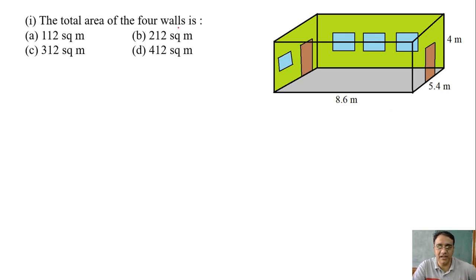What is the total area of four walls? Length is given 8.6, breadth is given 5.4, and the height is given 4. What is the formula for area of four walls for cuboid? Perimeter into height.